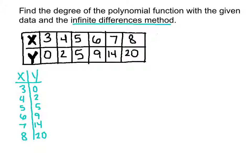Remember, we look at the y values when we do the infinite differences method. We take 2 minus 0, which gives us 2. Then 5 minus 2, that gives us 3.